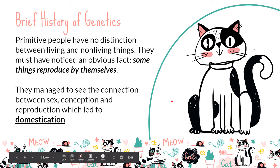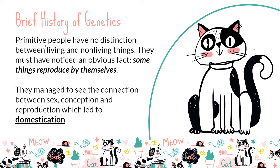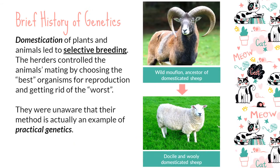In the past, our ancestors — primitive people — had no distinction between living and non-living things. However, they must have observed one obvious fact: that organisms tend to reproduce by themselves. They were able to see the connection between sex, conception, and reproduction of plants and animals around them, which led to domestication and selective breeding. The early herders controlled animals' mating by choosing the best individuals within their herd.